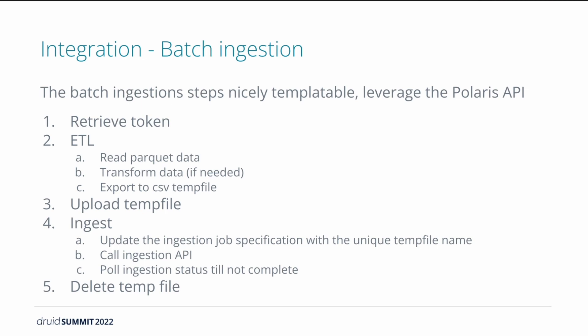The ingestion task uses the Polaris API and has the following steps. First, get a new token for authentication via API. Then in the ETL step, load the Parquet data from Hive, pre-process it, and export it to a CSV temp file with a unique name. Upload the temp file to Polaris via the API. Then for the ingestion: update the ingestion job specification with the unique temp file name, call the ingestion API with the job specification, poll the status until complete, and delete the temp file.